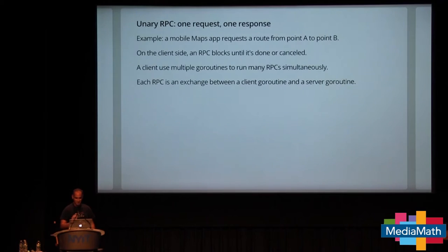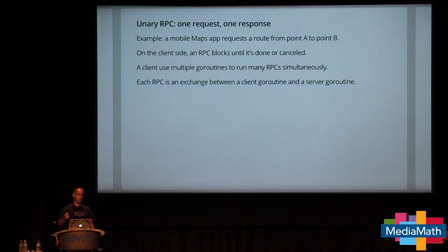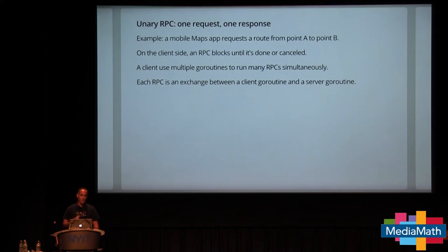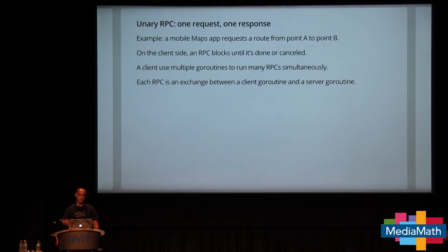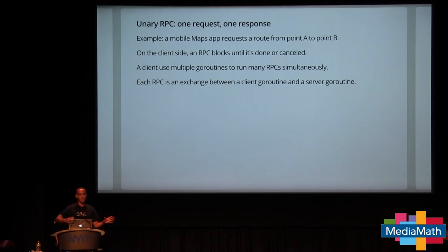I'll show you how we connect RPCs and streaming RPCs with goroutines and channels in Go programs. This is going to be a very code-heavy talk. For unary RPC, one request and one response — an example might be a mobile maps app requesting a route from point A to point B. On the client side in Go, an RPC is going to block. It's a synchronous call that blocks until it completes, with success or error, or is canceled. If the client wants to run multiple RPCs simultaneously, you use multiple goroutines.